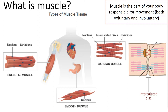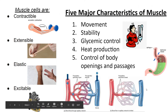The visible striations are actually associated with protein strands that pull together whenever a muscle cell contracts — we will discuss these later in the video. These same striations can be seen in cardiac muscle. In addition to being striated, cardiac muscle also has a feature called intercalated discs that enable electrical signals in the form of ions to pass between cells.